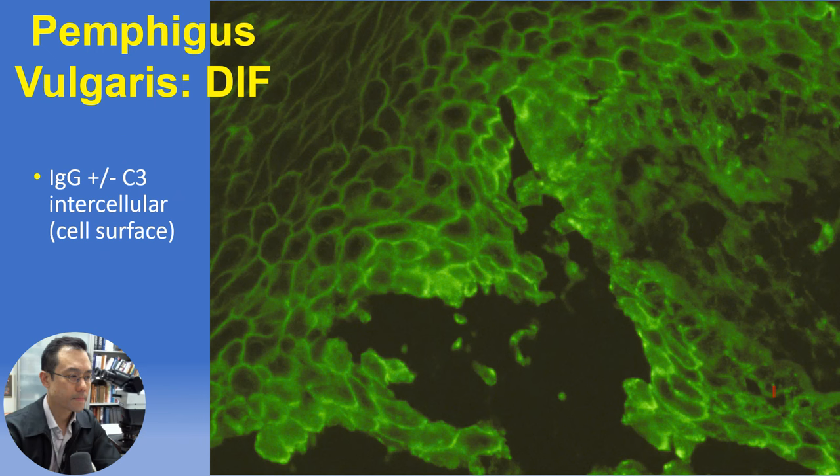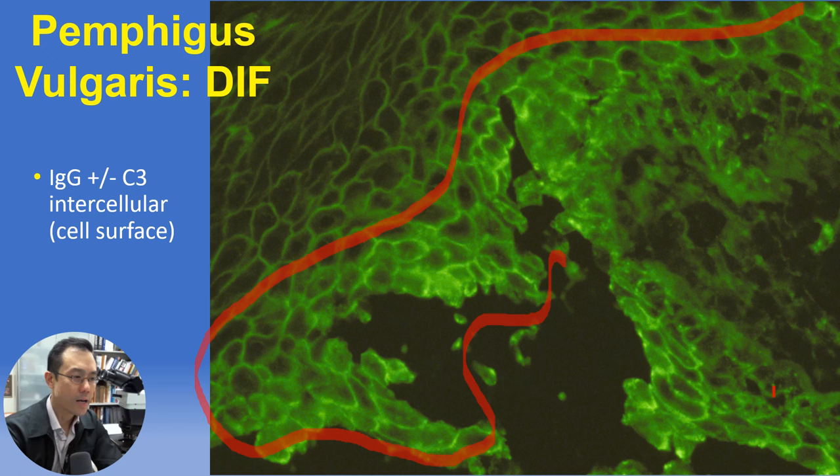Direct immunofluorescence testing is positive in the same intercellular pattern for all variants of pemphigus including pemphigus foliaceus, but with pemphigus vulgaris the antibodies are centered in the basilar epidermis extending all the way down to the basal layer, in contrast to the relatively superficial staining in foliaceus.